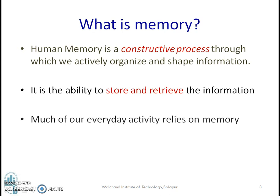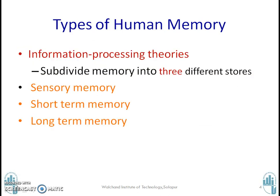What is memory? Human memory is a constructive process through which we actively organize and shape information. It is the ability to store and retrieve information. Much of our everyday activities rely on memory. Information processing theories have subdivided memory into three different stores: the first is sensory memory, the second is short-term memory, and the third is long-term memory.